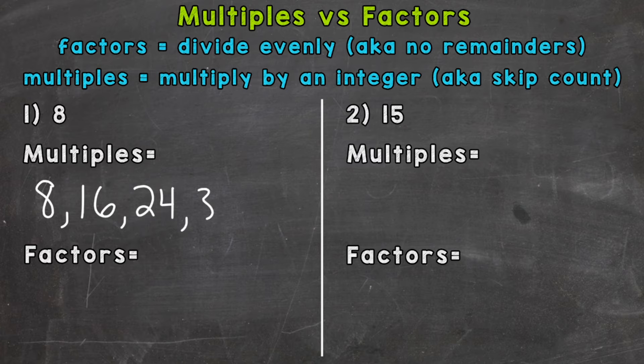Eight times four is 32. Eight times five is 40. And so on and so forth. So those multiples will continue on forever.